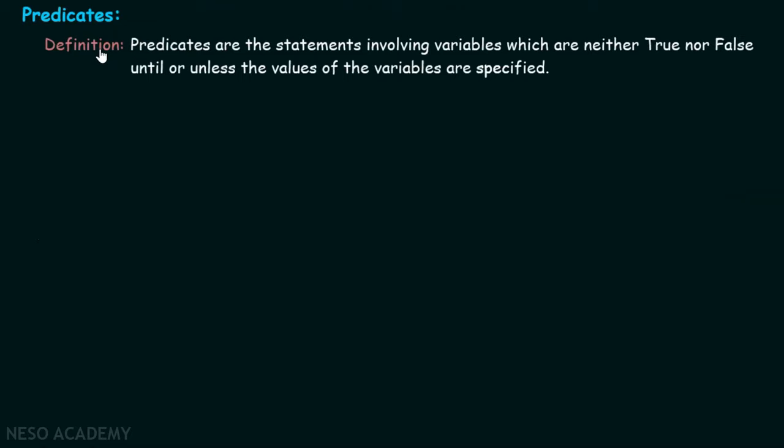Here comes the definition of predicates. Predicates are the statements involving variables which are neither true nor false until or unless the values of the variables are specified. This is the definition of predicates. Predicates are basically statements involving variables, which are neither true nor false until or unless the values of the variables are specified. We will consider certain examples here.